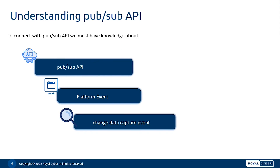Let us first understand the PubSub API. PubSub API provides a single interface for publishing and subscribing to platform events, including real-time monitoring and change data capture. Based on gRPC and HTTP/2, PubSub API efficiently publishes and delivers binary event messages in Apache Avro format.